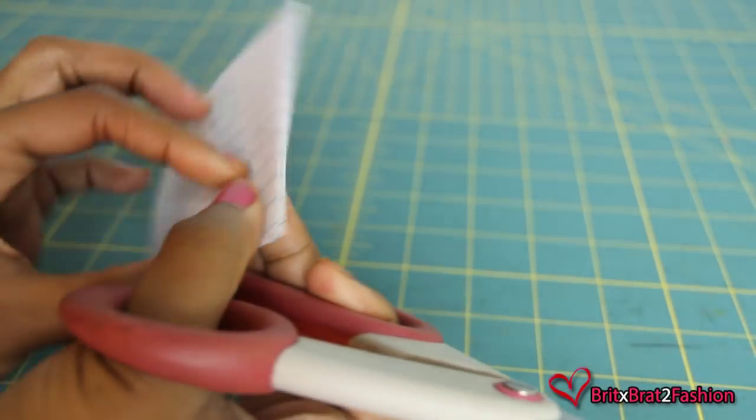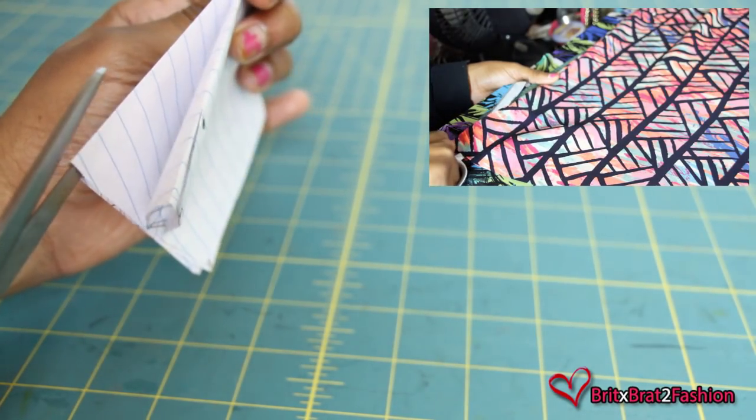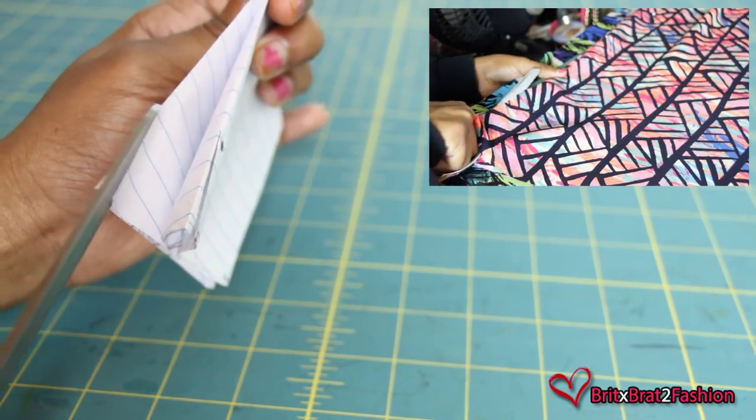You want to cut along the top edge fold, cutting through all the layers from the edge to the notch. This is going to be your armholes.